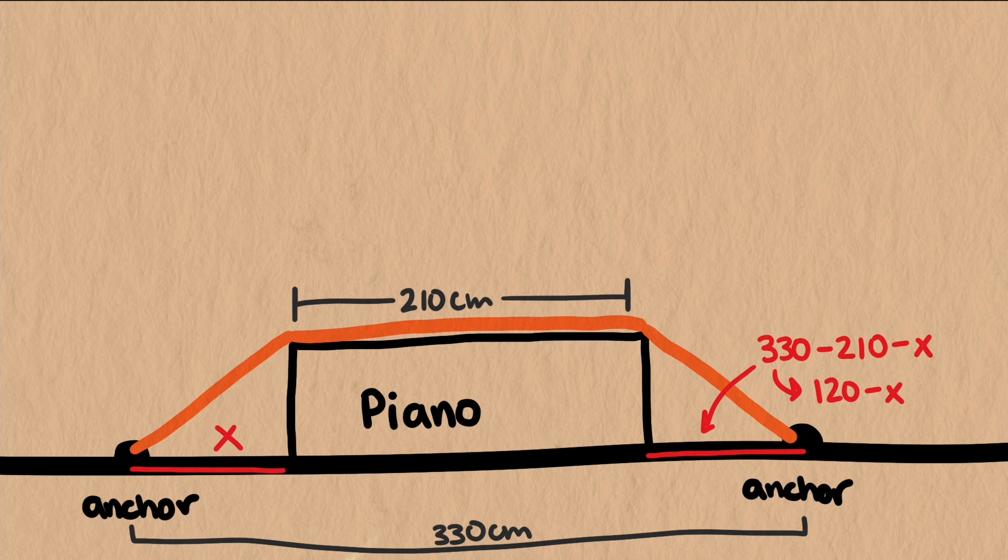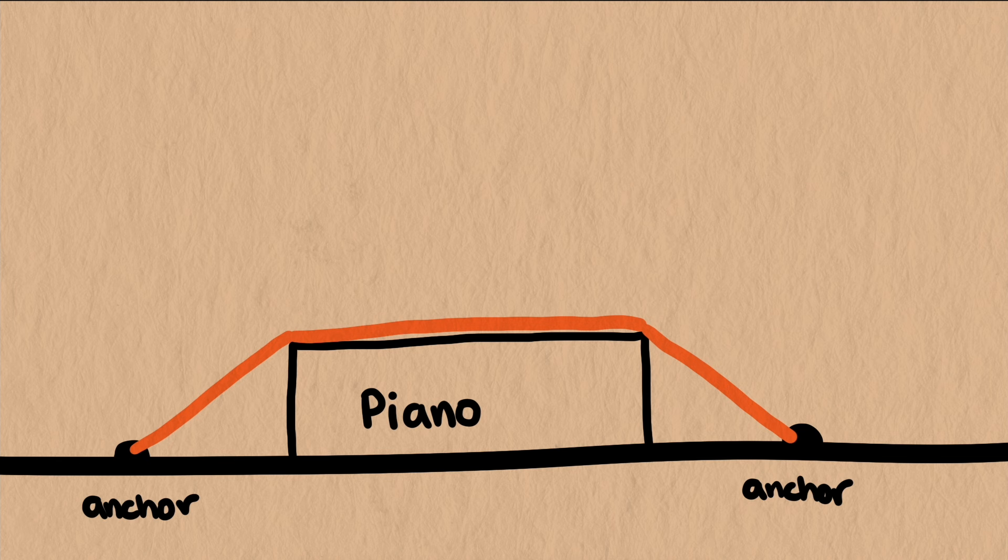If we run the same calculation and graph the resulting equation, we get a minimum at 60 centimeters, which means there are 60 centimeters on each side of the piano to the anchors, so the piano is in the center.